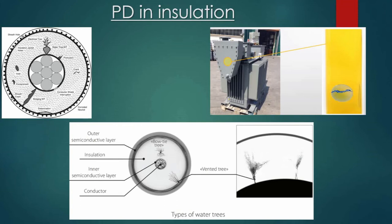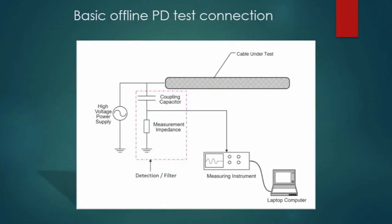Therefore, monitoring of PD activity on high voltage cables is very important. Information on PD patterns from cables with different types of defects is vital. One way to obtain this information is through measurement of PD on non-defective cables or by creating artificial typical defects within cable insulation. We perform both online and offline PD measurements; the next slide covers the basic offline PD test connection.